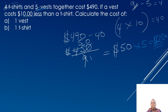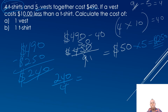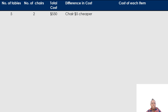Now that I know the cost of one vest is $50, I can work out the cost of five vests: $50 times five gives a total of $250. Now I subtract the cost of all the vests from the total cost: $490 take away $250 gives me $240. This $240 is the cost of the four t-shirts. Dividing by four: 240 divided by four is $60. So the cost of one vest is $50 and the cost of one t-shirt is $60.